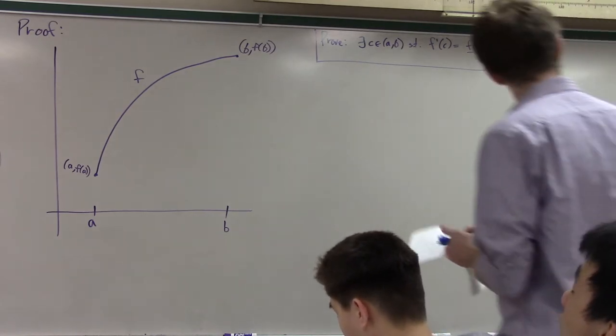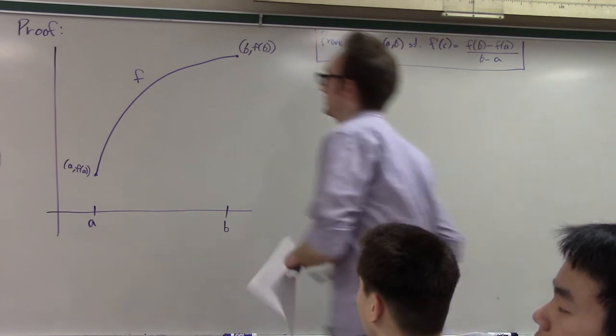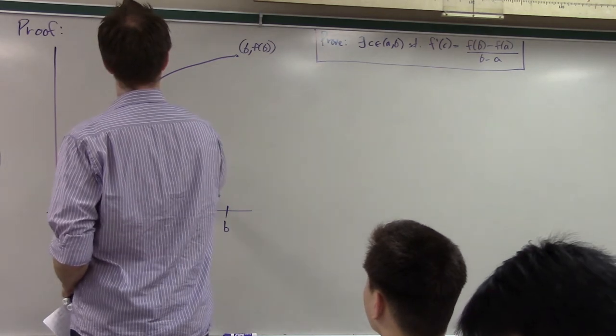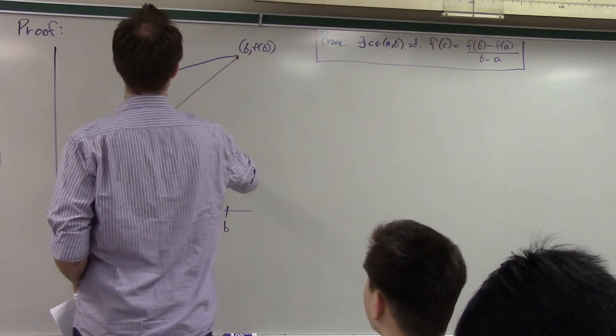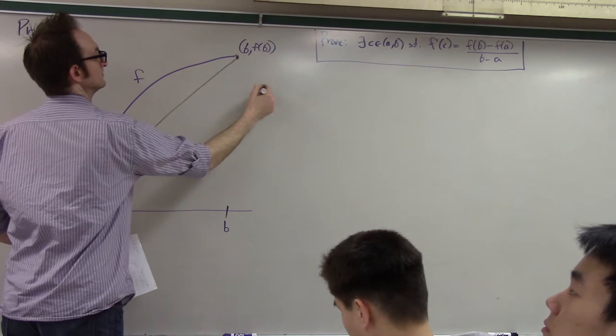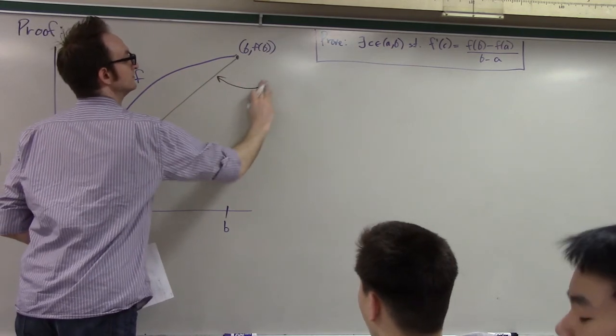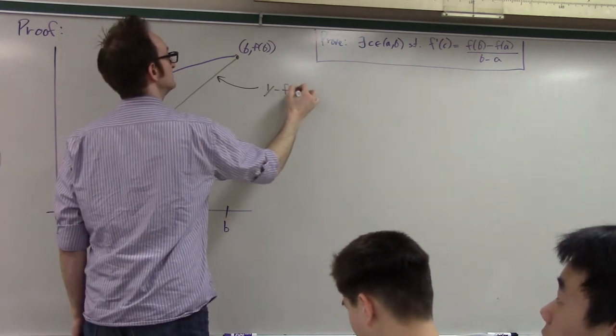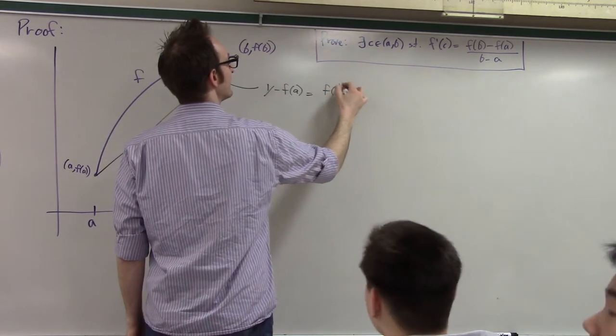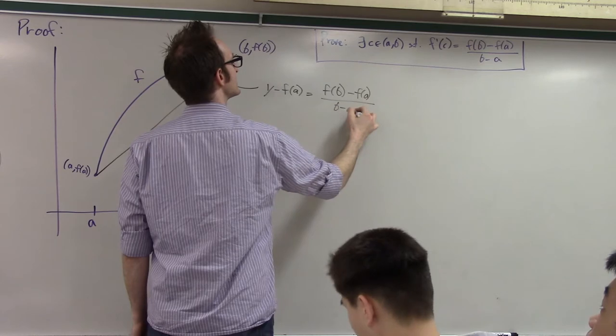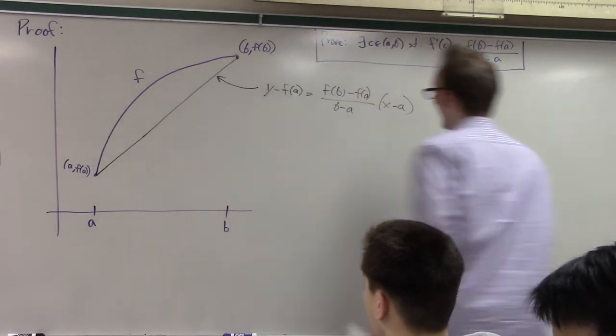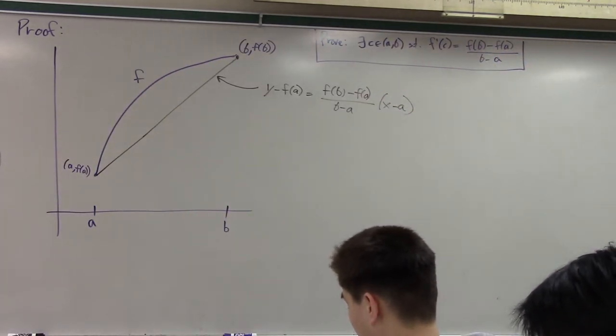All right. Well, let's draw in this average rate of change line. Ooh, terrible line. Whatever. Okay, can somebody give me the equation of this line? Just in general? I'm going to say F equals F of B minus F of A over B minus A. Yeah, perfect. Yeah, that's just the line which goes through A, F of A and has slope F of B minus F of A over B minus A. Everyone cool with that?